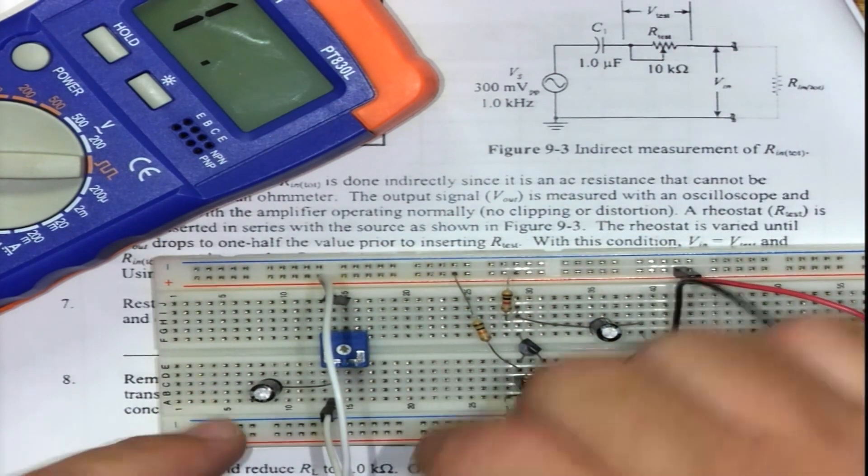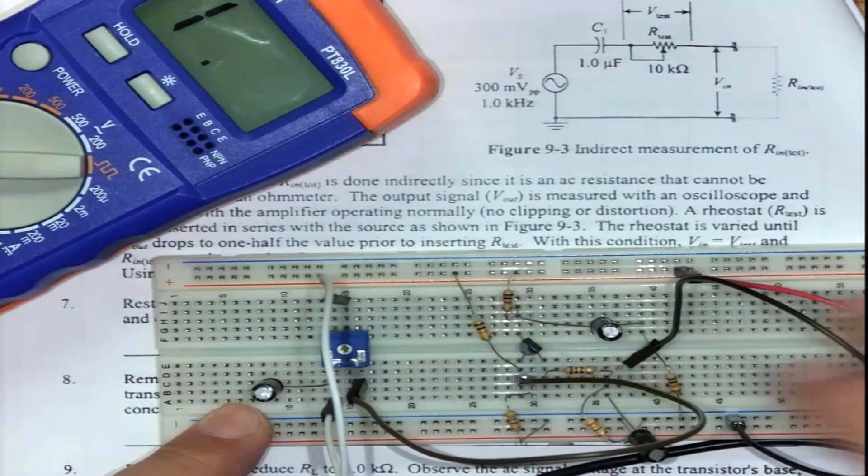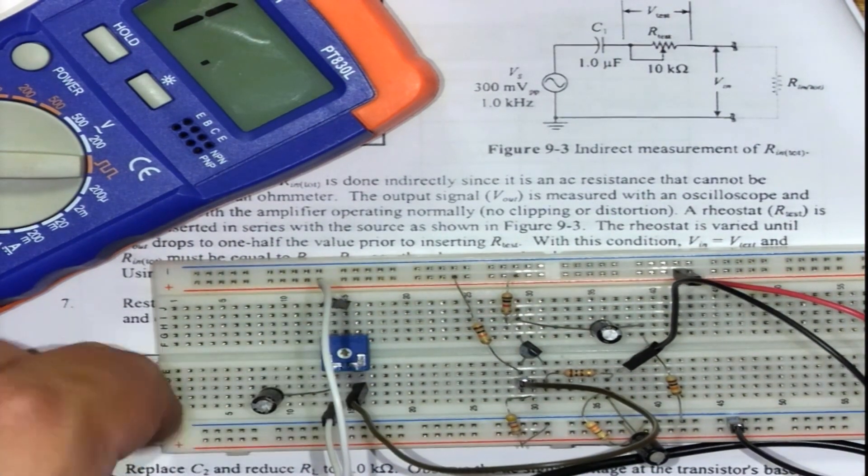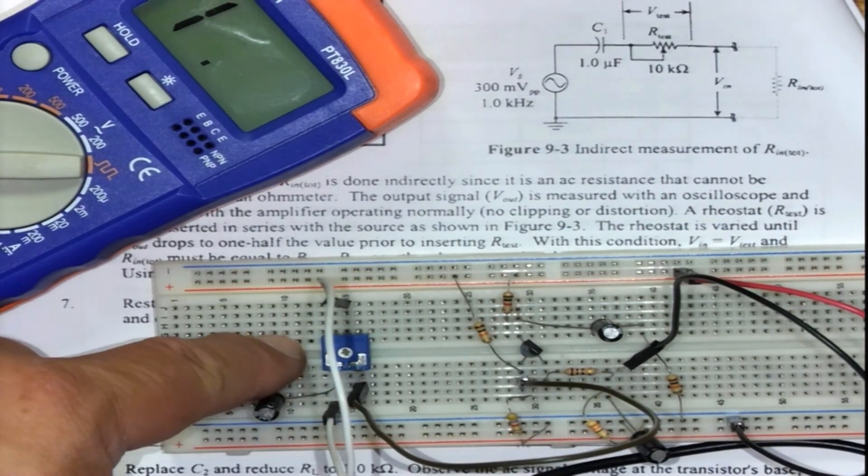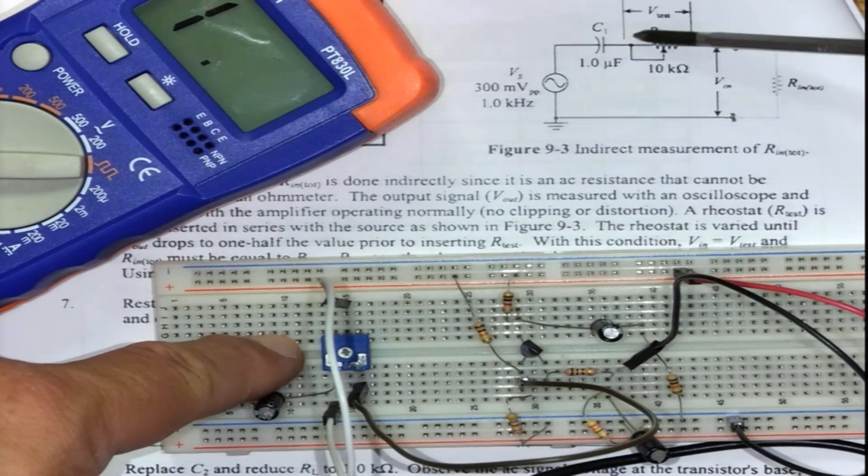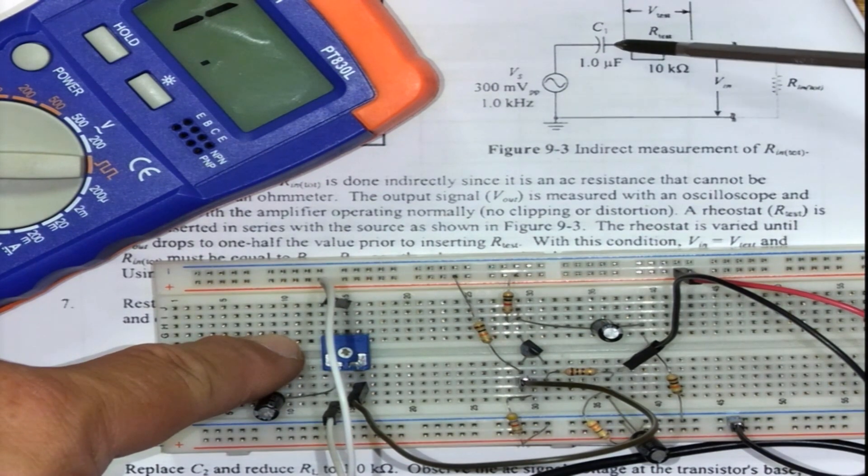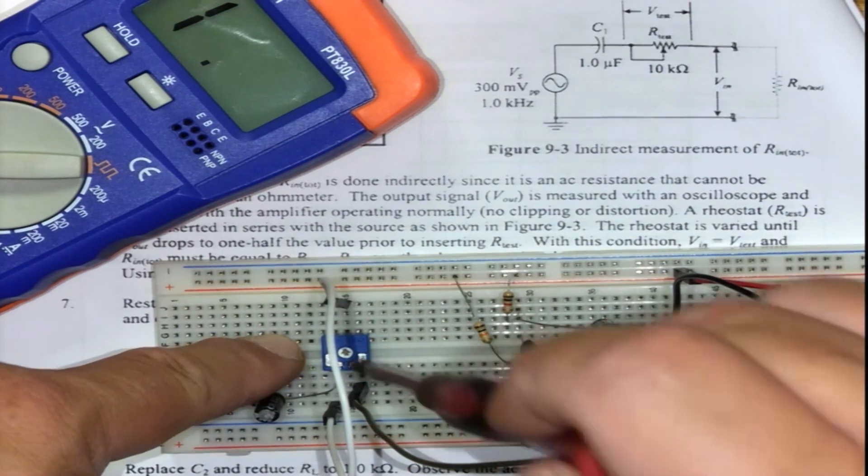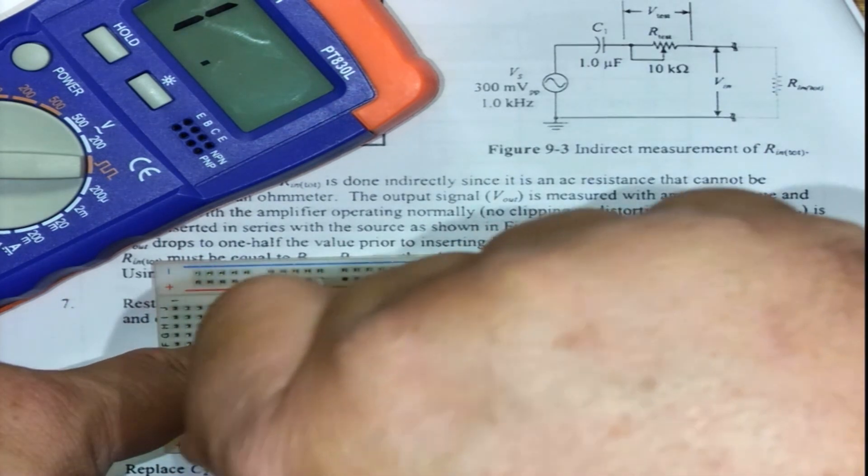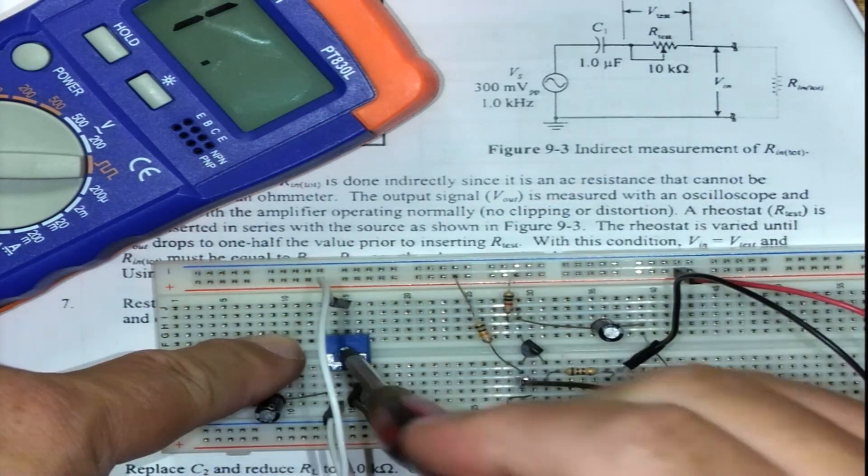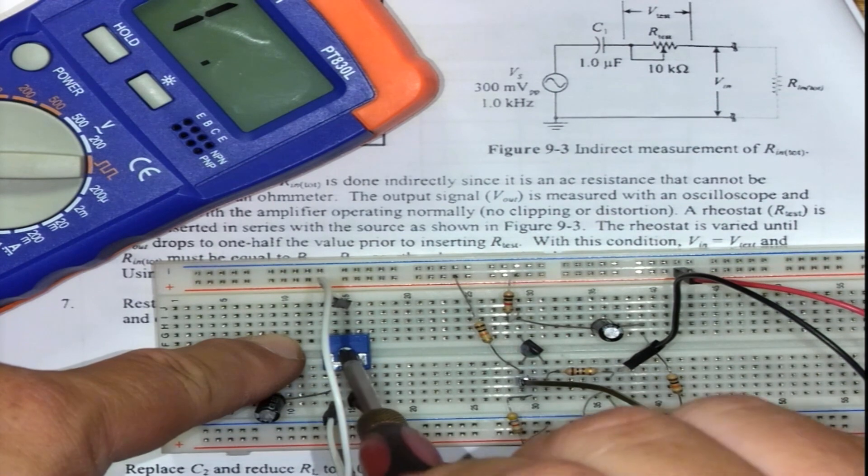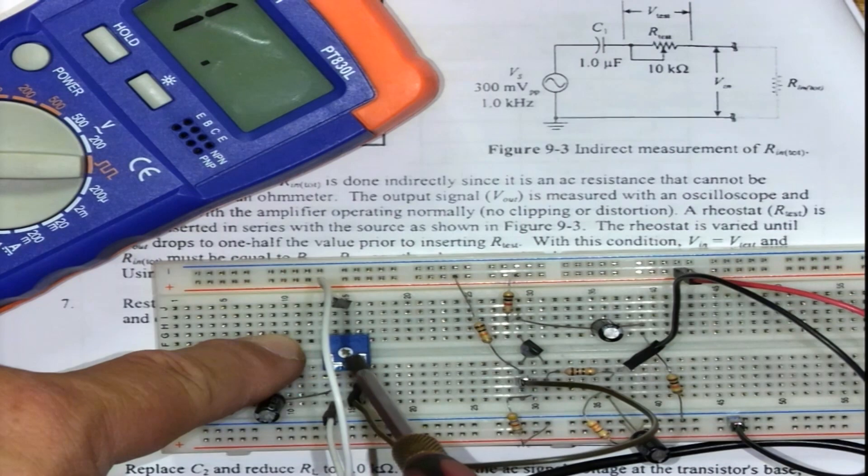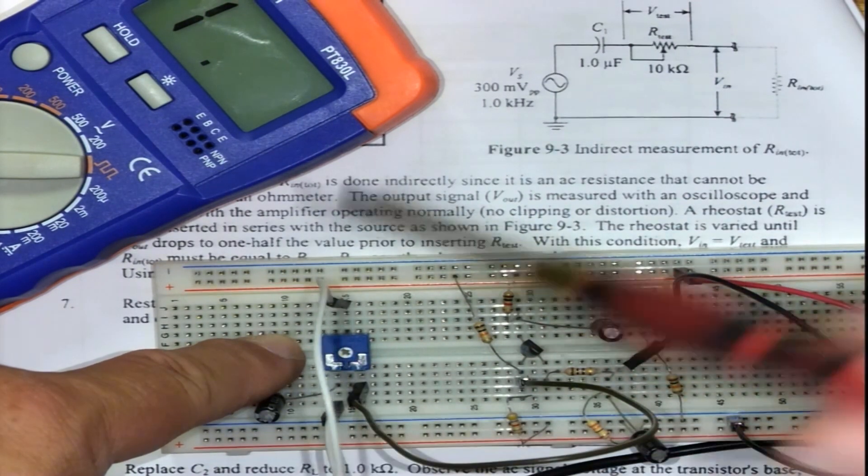There it goes to the base. Now ladies and gentlemen you've got a variable input that's going to do exactly what my circuit is doing. It's going to share the voltage input coming from the audio generator between the amplifier and the variable resistor. By adjusting this we are going to observe the output.